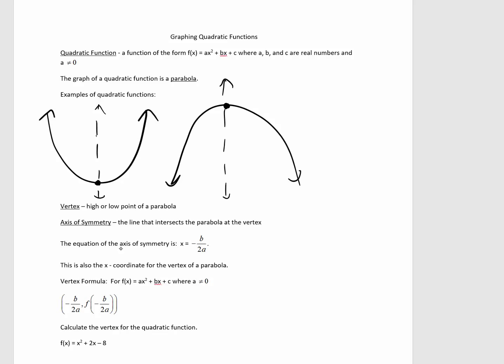So, the equation of the axis of symmetry is x = -b/2a. And keep in mind, because it is intersecting the vertex, it's also the x-coordinate for the vertex of a parabola.